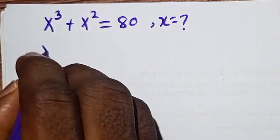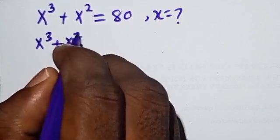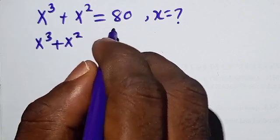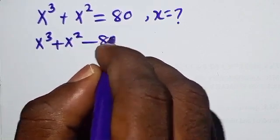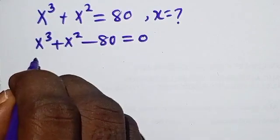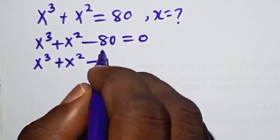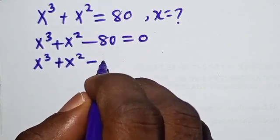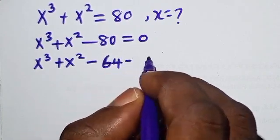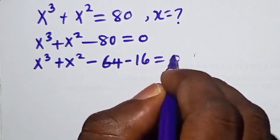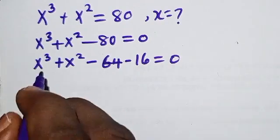I'm going to write this as x³ plus x², and send 80 to the left-hand side: x³ + x² - 80 = 0. I'm going to write 80 as 64 minus 16, since 64 minus 16 gives minus 80.